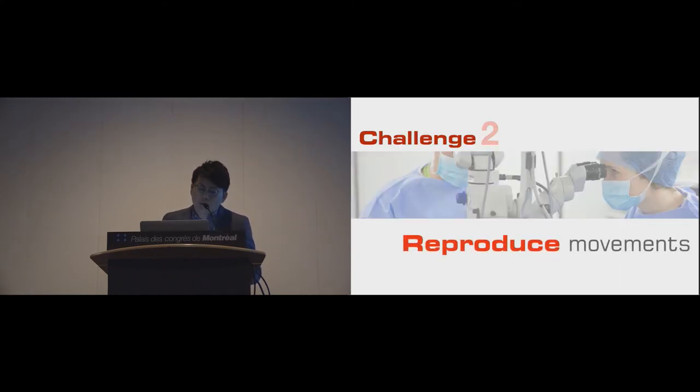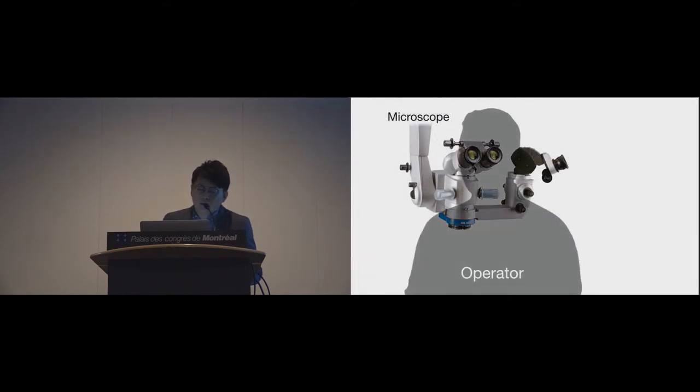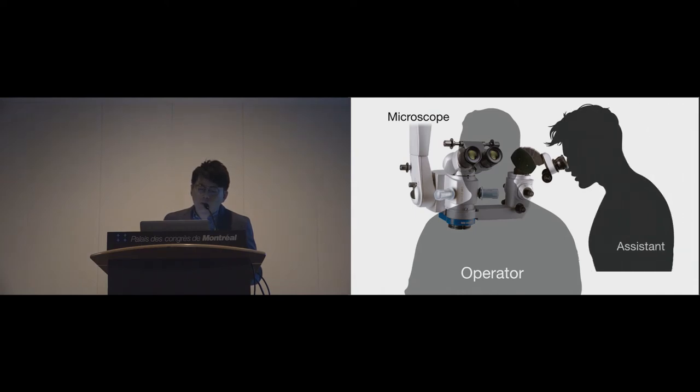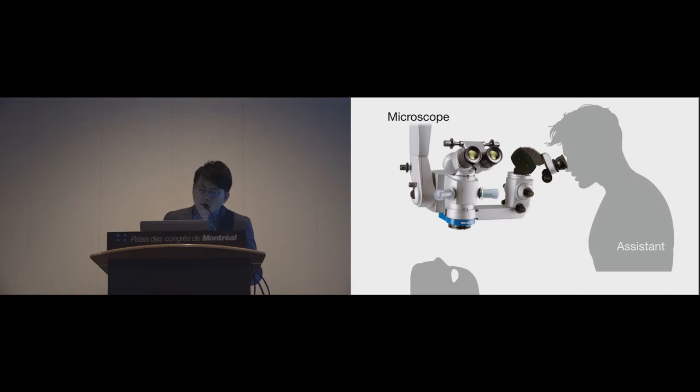The second challenge is, how can a trainee reproduce the subtle movement performed by their supervisor? A surgical microscope usually has one assistant microscope for a trainee to observe the surgical field. Although they can see the same images as the operator's view, they cannot see the hand posture simultaneously.